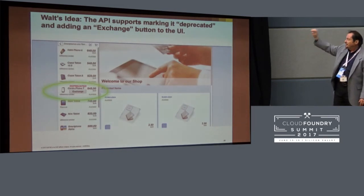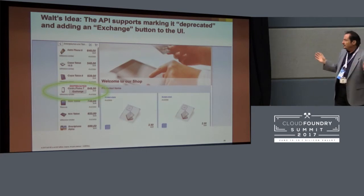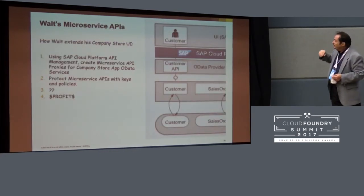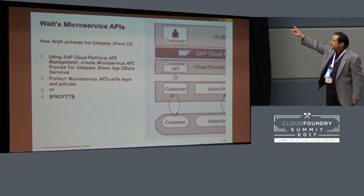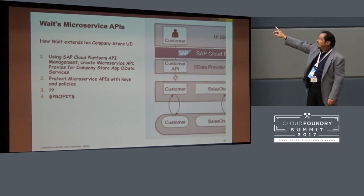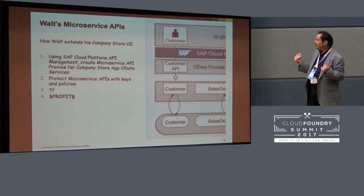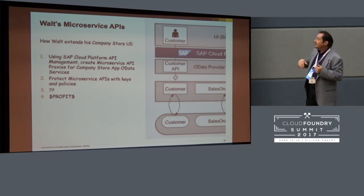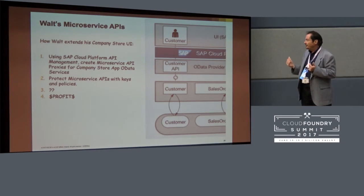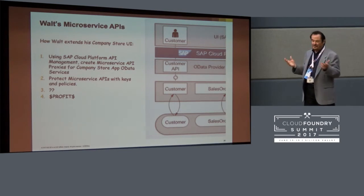He wants a pop-up showing the device is deprecated, a single button that says 'exchange,' and then the JavaScript does the rest. The steps: number one, use SAP Cloud Platform API management, create API proxies for the OData services, and then protect them with keys and policies. Then something else and eventually you hope to make money.